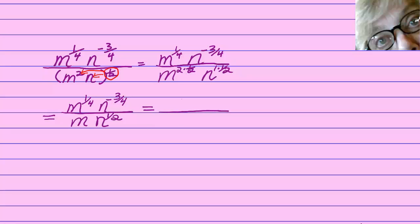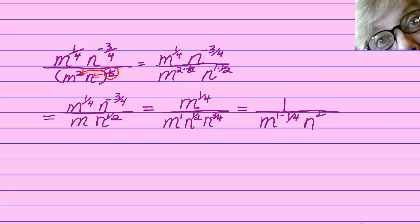Now, m to the one-fourth stays on top, but n to the negative three-fourths is going to move down and become n to the positive three-fourths. So we'll have m to the one times n to the one-half — which were already there — times n to the positive three-fourths. All of which will give us 1 over m to the one minus one-fourth, because we're dividing like bases so we subtract exponents, and then n to the one-half plus three-fourths, because we have like bases that we're multiplying so we add the exponents.